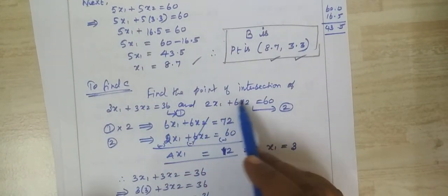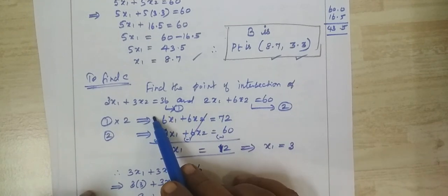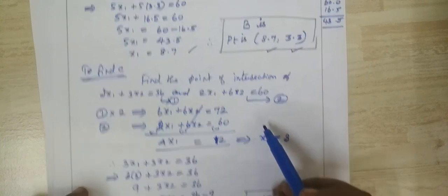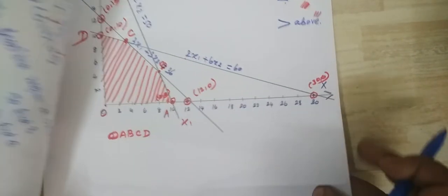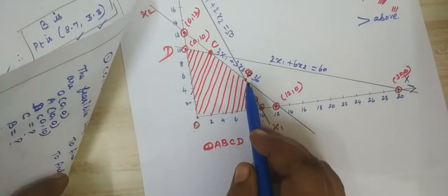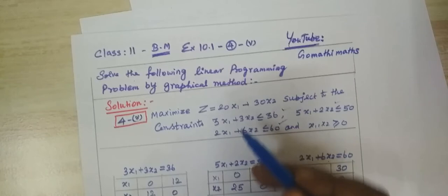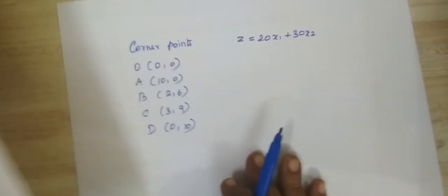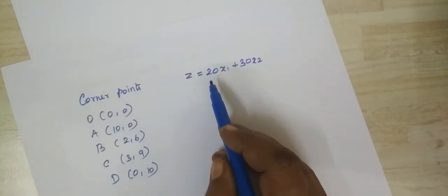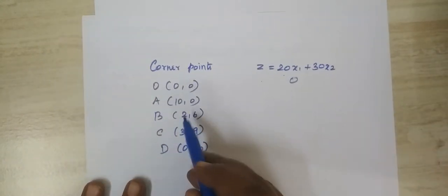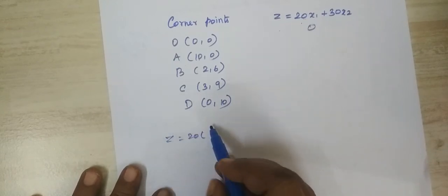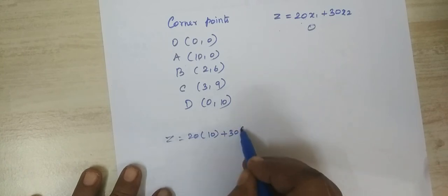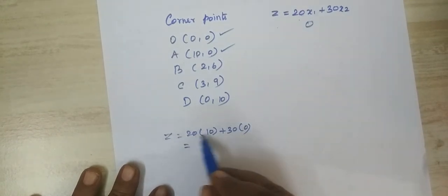The point of intersection of 3x1 plus 3x2 equal to 36 and 2x1 plus 6x2 equal to 60 is found. Now we evaluate the corner points. The objective function is Z equal to 20x1 plus 30x2. At point O (0,0), Z equal to 0. At (10, 0), Z equal to 20 times 10 plus 0 equal to 200.